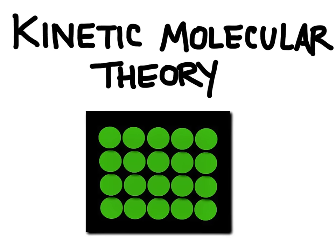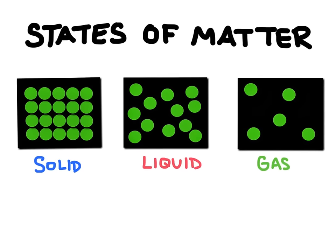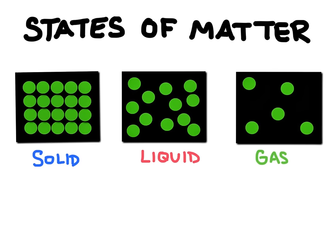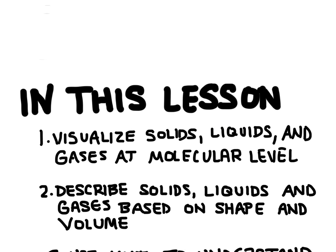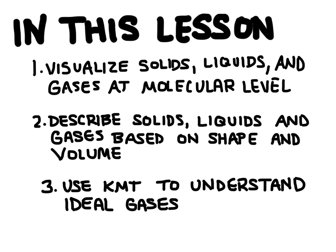In this video, we're going to learn about kinetic molecular theory. Kinetic molecular theory is a scientific theory that is used to describe the states of matter — solid, liquid, and gas — and how they transform into one another. In this lesson, we're going to visualize solids, liquids, and gases at the molecular level, describe them based on their shape and volume, and then use kinetic molecular theory to understand ideal gases.